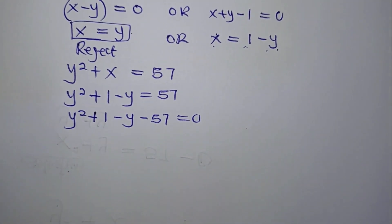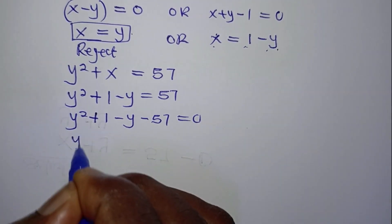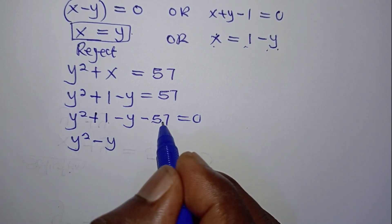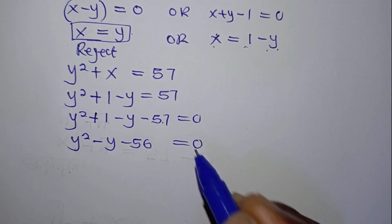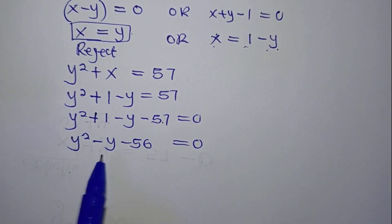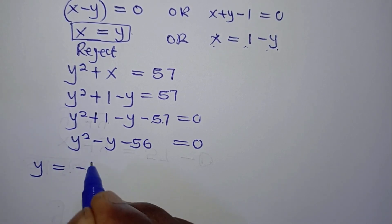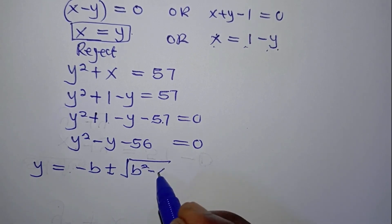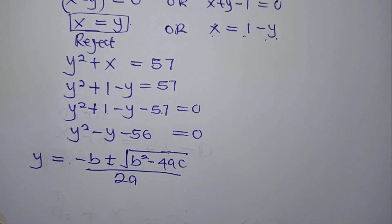So we have y squared plus one minus y minus 57 equals zero. We can simplify this further: y squared minus y, and one minus 57 gives us minus 56, so y squared minus y minus 56 equals zero. This is a quadratic, so we can solve it using the quadratic formula: y equals minus b plus or minus square root of b squared minus 4ac, all over 2a.